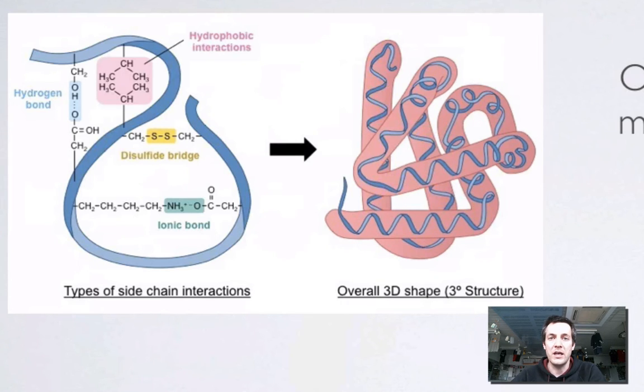But the key thing here is that rather than these being interactions between the amide groups, these are interactions between the side chains, so the R groups of the amino acid molecules.